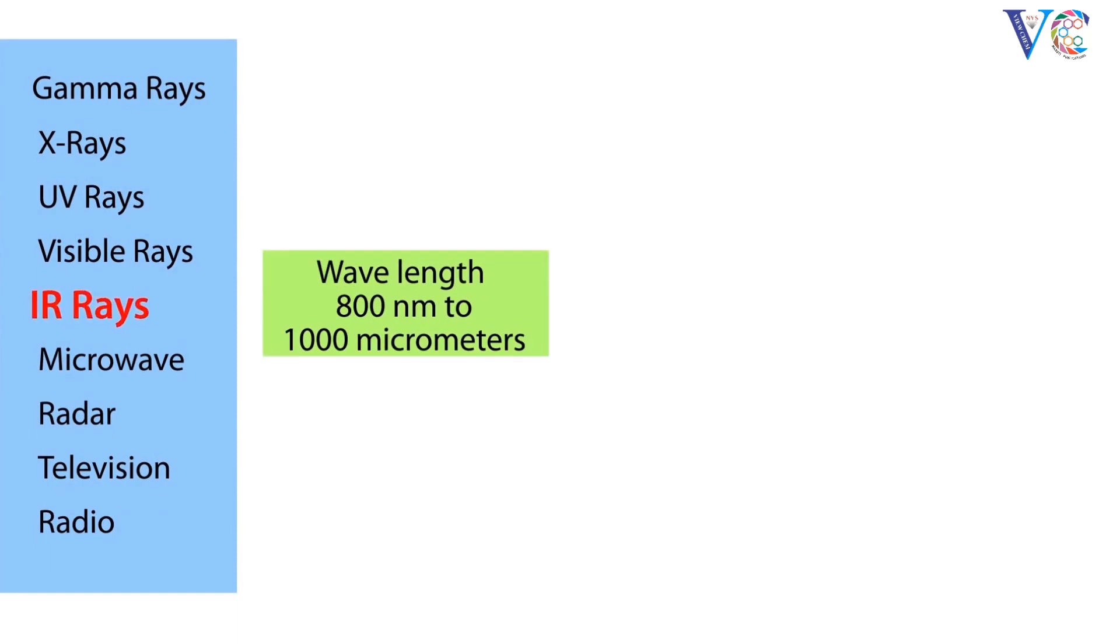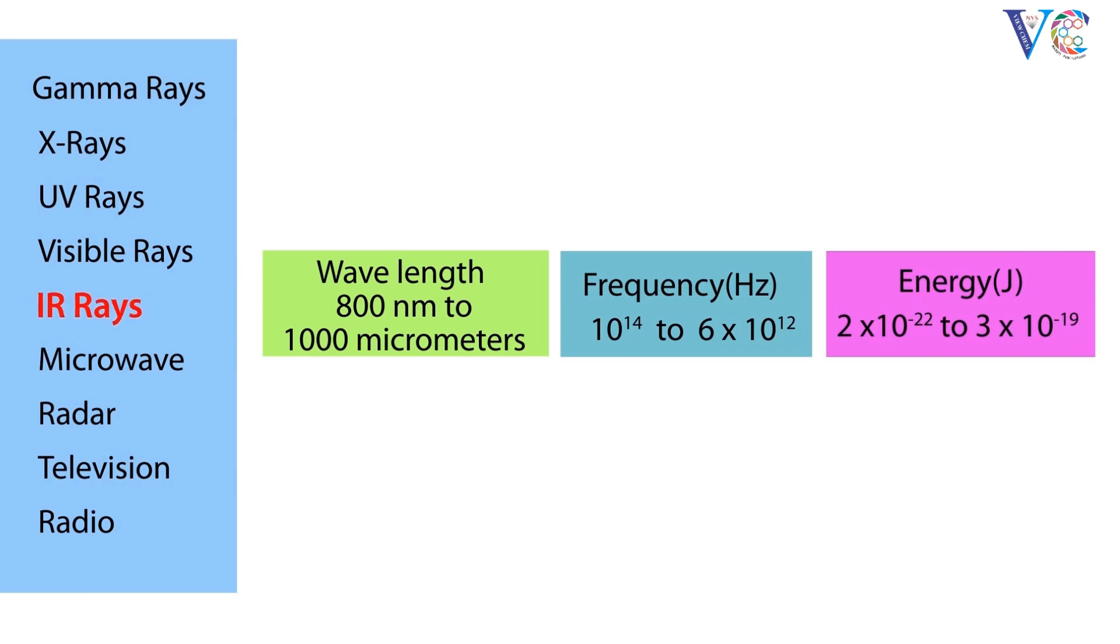The wavelength range of infrared radiation is 800 nanometers to 1000 micrometers, the frequency range is 10^14 to 6×10^12 hertz, and the energy range is 2×10^-22 to 3×10^-19 joules.